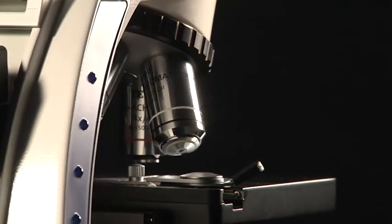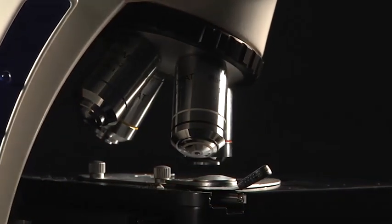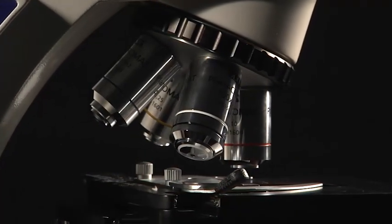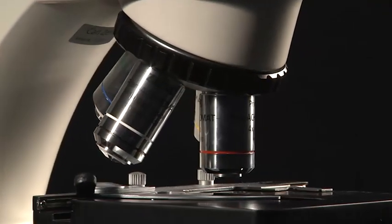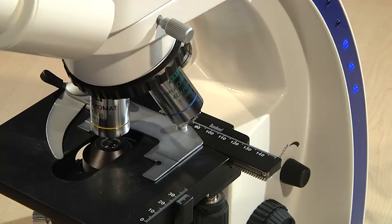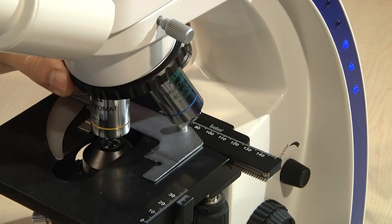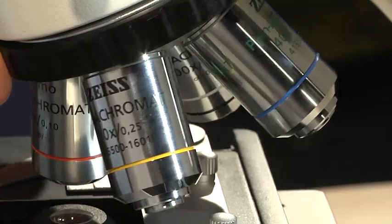An objective is the heart of the light microscope. Four objectives, with magnifications between four times and a hundred times, are mounted on a turret. Here, the primary image is formed, which makes the quality of the lenses crucial for the quality of the final image.